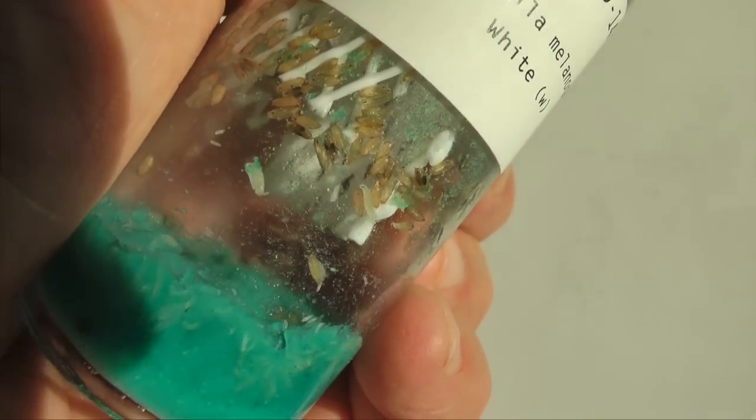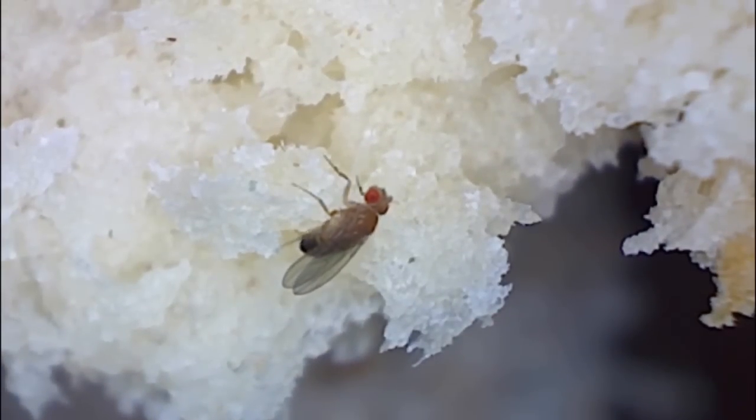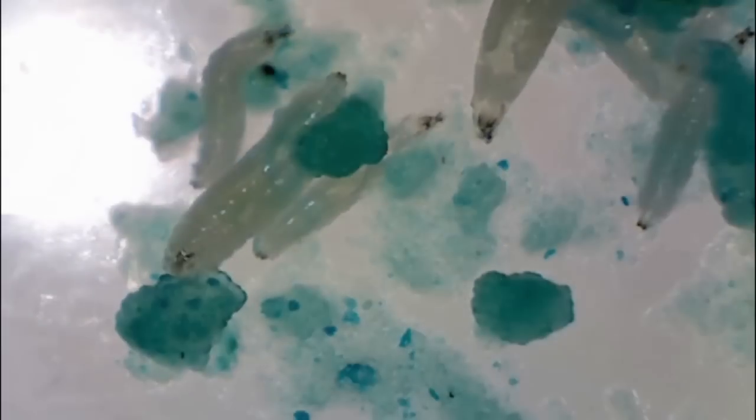Before we start, let's look at the life cycle of Drosophila. The life of this tiny fly begins as an egg. The egg hatches into a small larva.